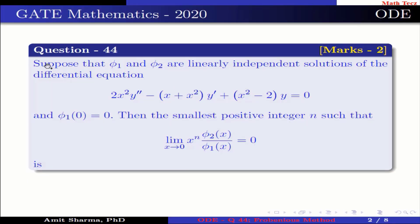The question is: suppose that φ1 and φ2 are linearly independent solutions of the differential equation 2x² y'' − (x + x² − 2)y = 0, and φ1(0) = 0. Then find the smallest positive integer n such that the limit as x approaches 0 of x^n · φ2(x) / φ1(x) equals 0.